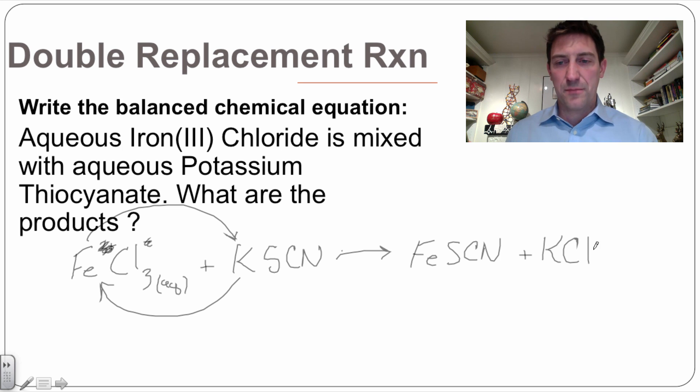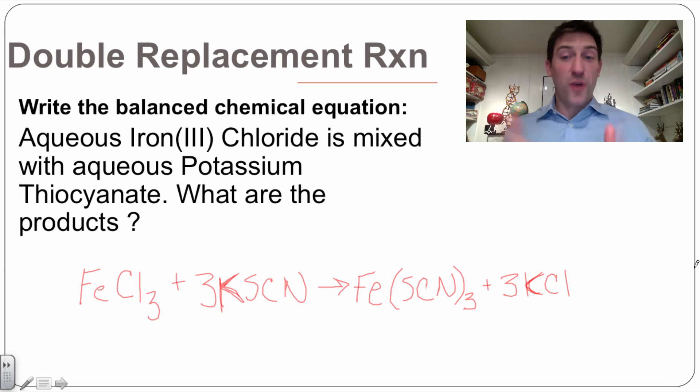So I've rewritten that out to make it a little more legible and you can see what we end up with with our iron thiocyanate, our iron three thiocyanate and our potassium chloride. Now this equation and this reaction is actually a little more complex than I presented it here, but for learning this process of double displacement, this works out just fine.